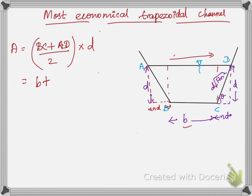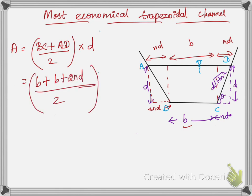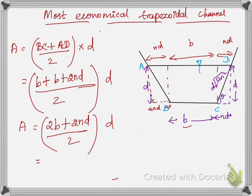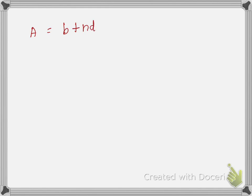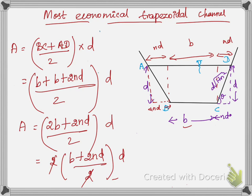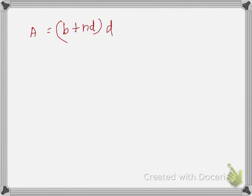The top width AD = B + 2nD, because each side contributes nD. So the area formula becomes A = (B + B + 2nD)/2 × D = (2B + 2nD)/2 × D. Simplifying, A = (B + nD)·D.